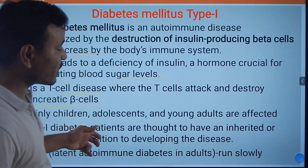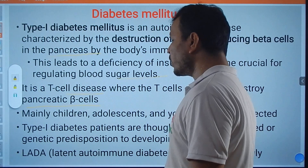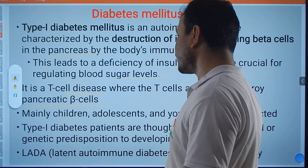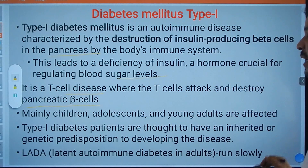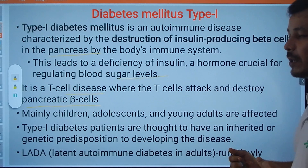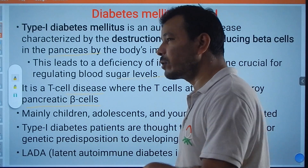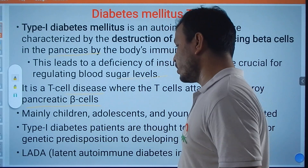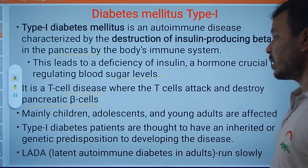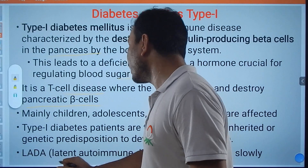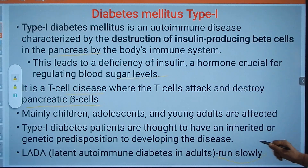Type 1 Diabetes Mellitus mainly occurs in children, adolescents, and young adults. Patients are generally considered to have an inherited or genetic predisposition to developing the disease. There is also a term called LADA — Latent Autoimmune Diabetes in Adults — which progresses more slowly.